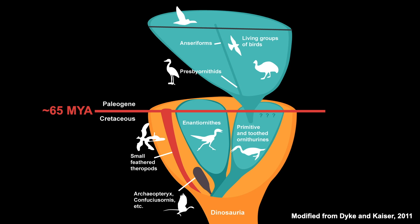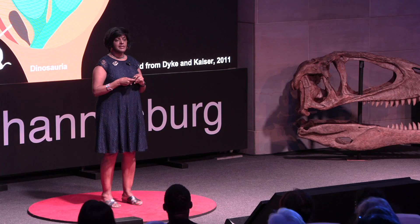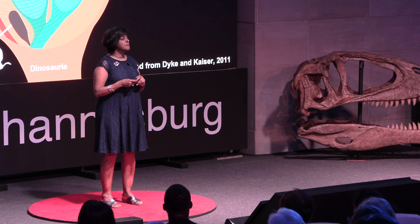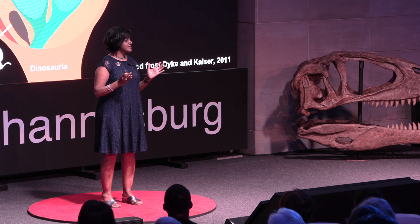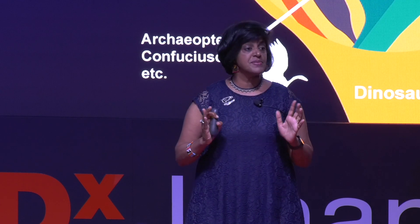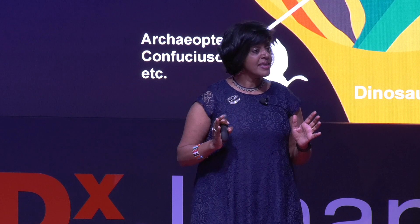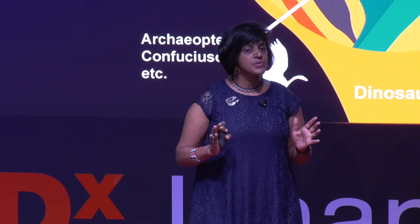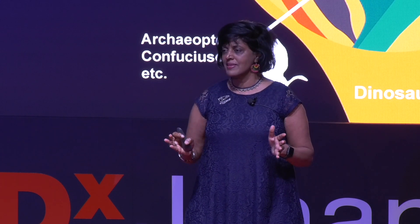At the end of the Cretaceous, 65 million years ago, when the dinosaurs went extinct, many of the Mesozoic birds also went extinct. But clearly some of them survived, because today we have 10,000 species of modern birds.